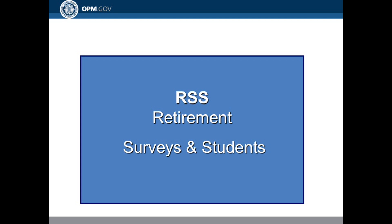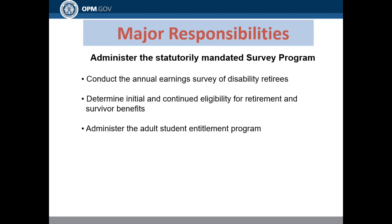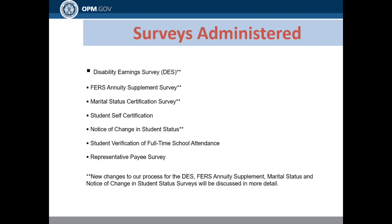Regarding Retirement Surveys and Students: within the office, major responsibilities include administering the statutorily mandated survey programs, which are conducted regarding the annual earnings survey of disability retirees, determining initial and continued eligibility for retirement and survivor benefits, and administering the adult student entitlement program. Since 2016, it is now mandatory for all individuals receiving CSRS or FERS disability benefits to respond to the disability earnings survey; if not, they are placed in temporary suspense. Regarding the FERS annuity supplement earnings survey, as of July 2016, it has become partially automated to help us become more productive and efficient in processing the large volume of survey responses received each year.